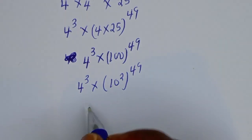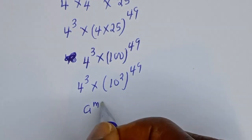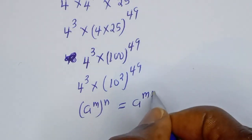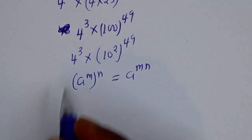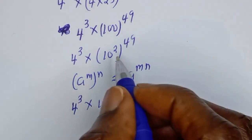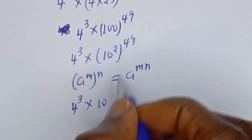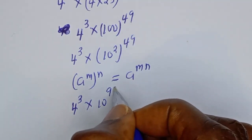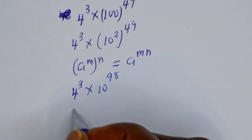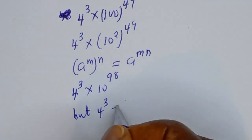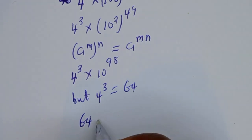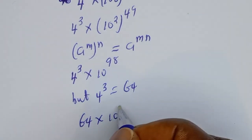Using the rule that A to the power of M, to the power of N, equals A to the power of M times N, this becomes 4 to the power of 3 multiplied by 10 to the power of 2 times 49, that is 98. And 4 to the power of 3 is equal to 64.